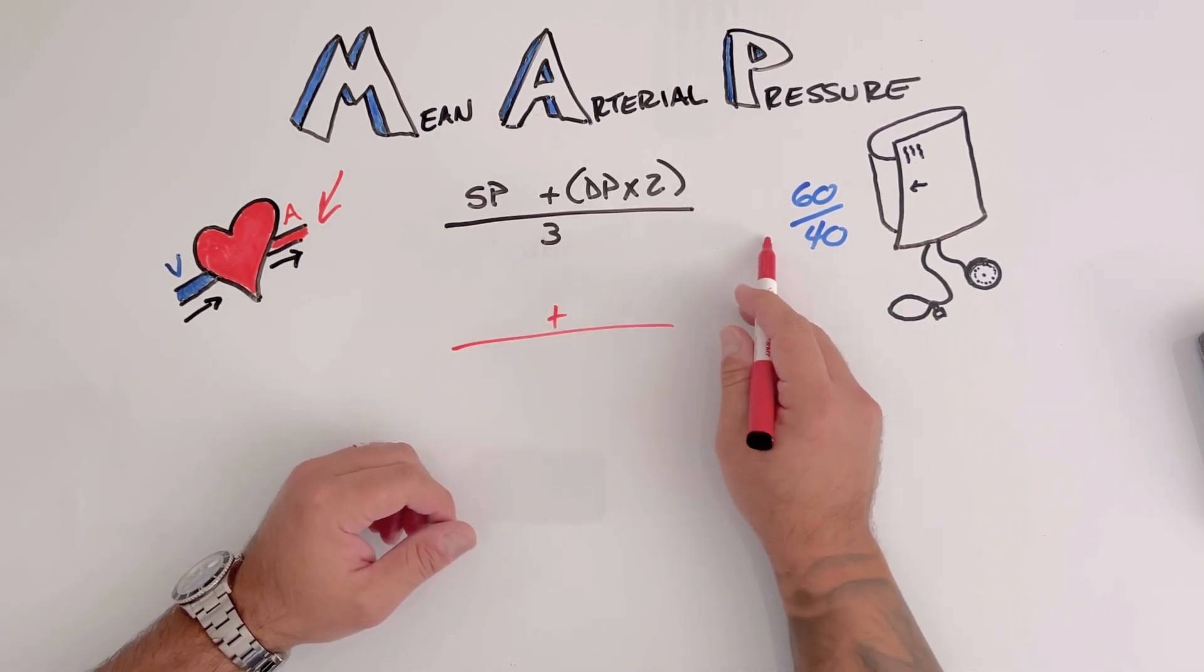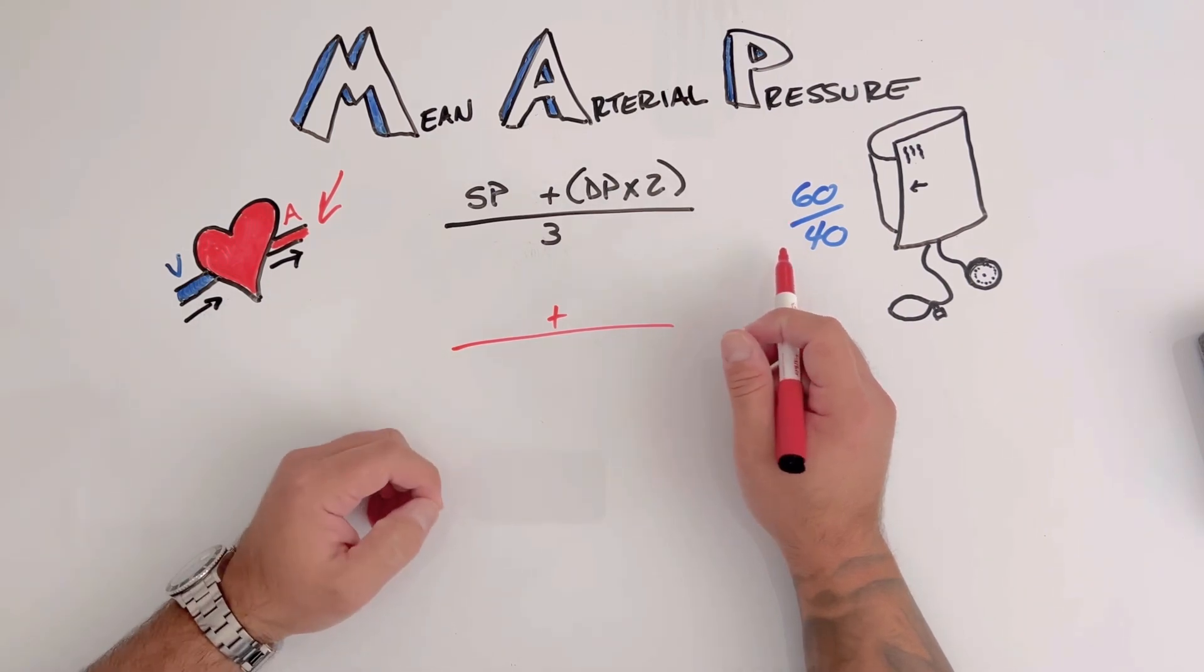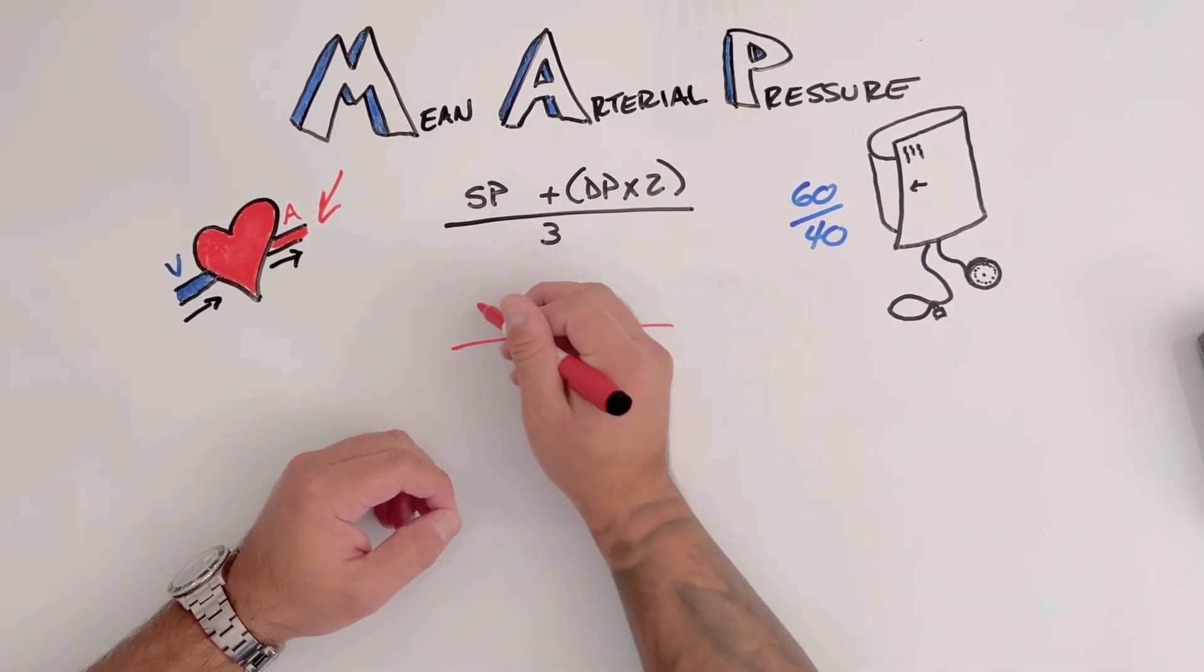So let's start with a BP of 60 over 40. Obviously, first glance, we know that this patient is hypotensive and probably perfusing poorly, but let's see what their MAP is. Remember, we're aiming for at least 65. So let's plug it all in.